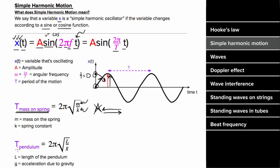The formula for the period of a pendulum — a mass swinging on a string — is two pi times the square root of the length of the string divided by the magnitude of the acceleration due to gravity. This also does not depend on the amplitude, as long as the angles are small, and it doesn't depend on the mass either.